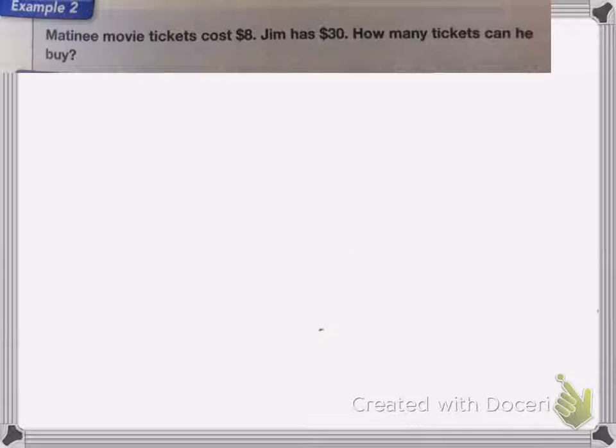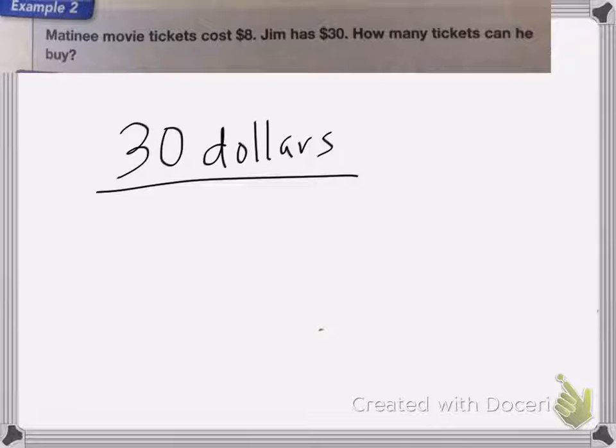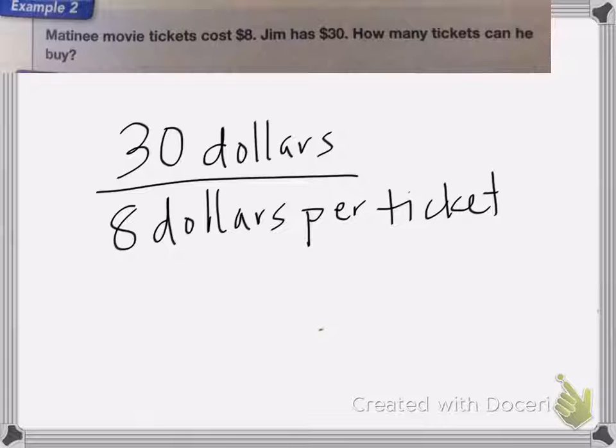Here we have matinee movie tickets cost $8, Jim has $30, how many tickets can he buy? So first I'm going to divide, so I have $30, and it's $8 per ticket. So my dollar amounts would cancel, the dollars would cancel, so I end up with my label is going to be ticket. Now I'm going to cancel the 30 and the 8. So I can turn the 8 into a 4, and the 30 becomes a 15.